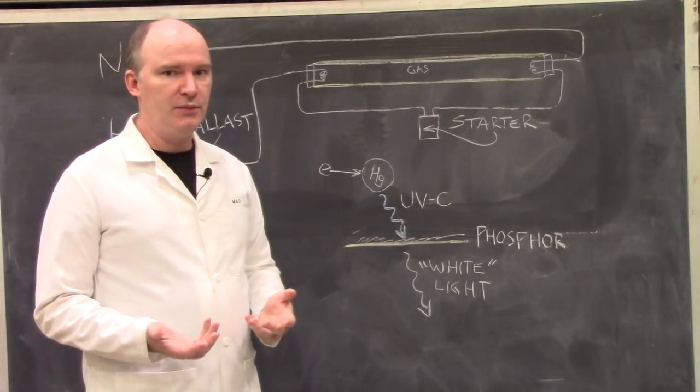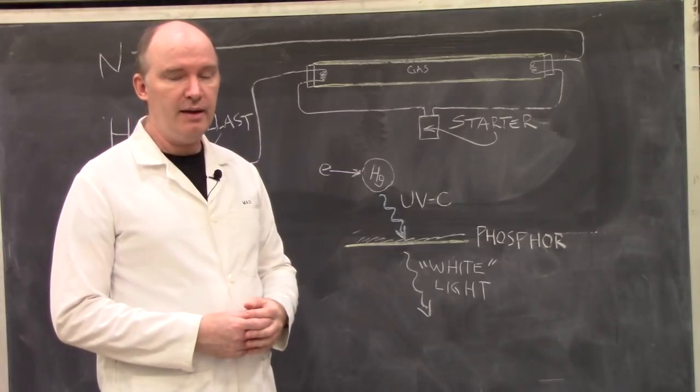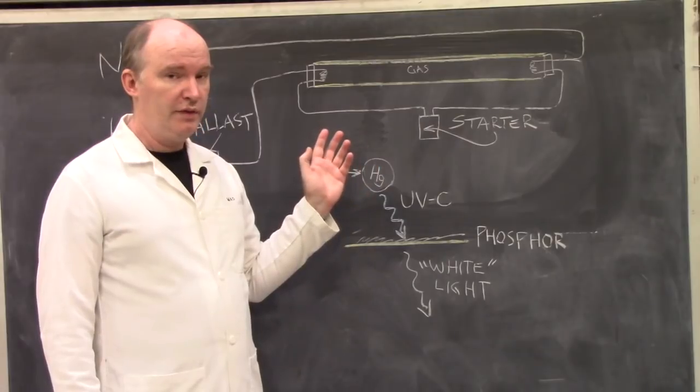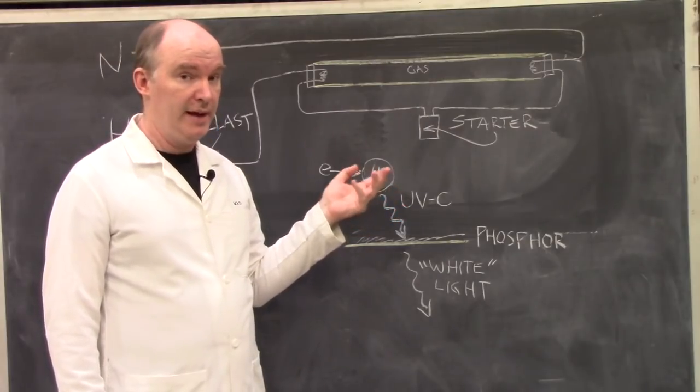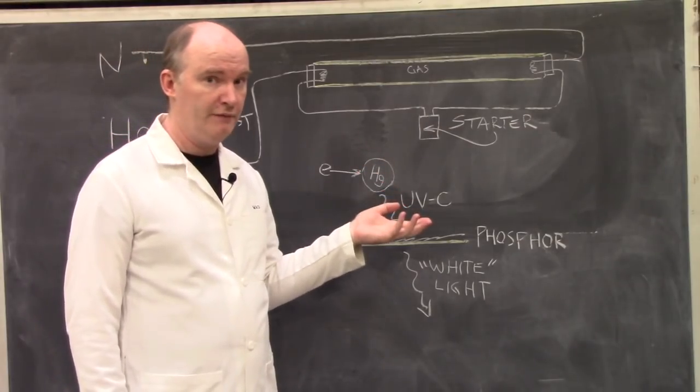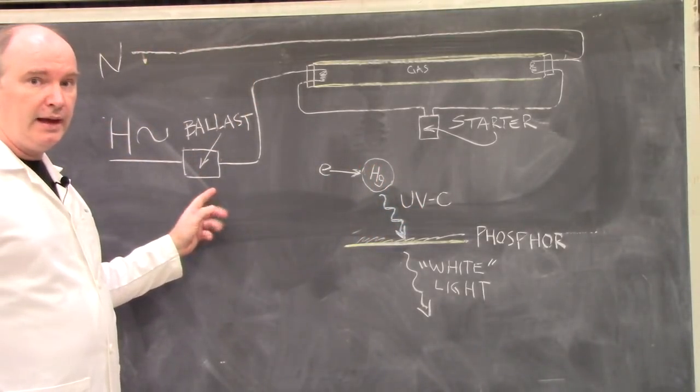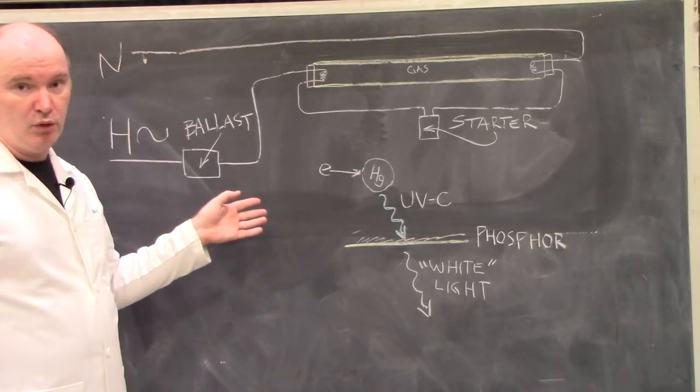Now, one of the problems with a fluorescent tube is that it actually gets less resistive as more current flows through it, which would then make more current flow through it, which would make it less resistive, which would make more current flow through it. So, without this ballast regulating it, it would very rapidly either self-destruct or at least trip the breaker.